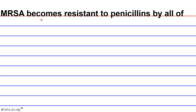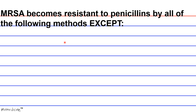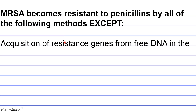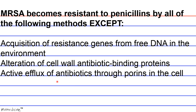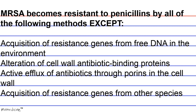Question 1: MRSA becomes resistant to penicillins by all of the following methods EXCEPT: A. Acquisition of resistance genes from free DNA in the environment. B. Alteration of cell wall antibiotic binding proteins. C. Active efflux of antibiotics through proteins in the cell wall. Or D. Acquisition of resistance genes from other species.